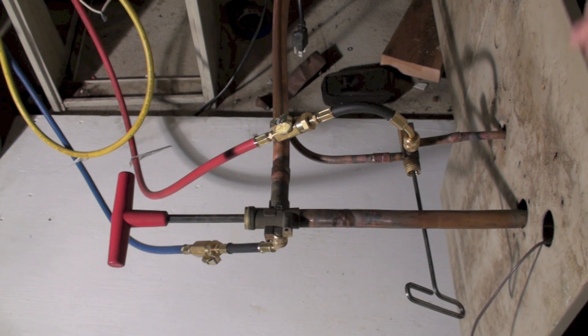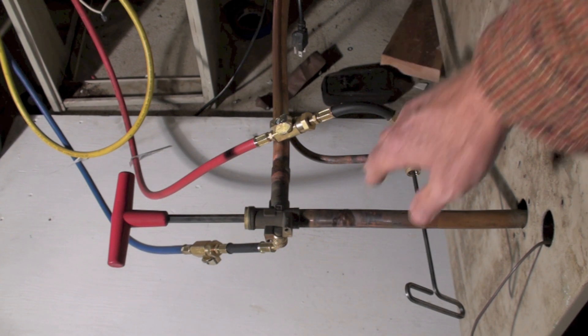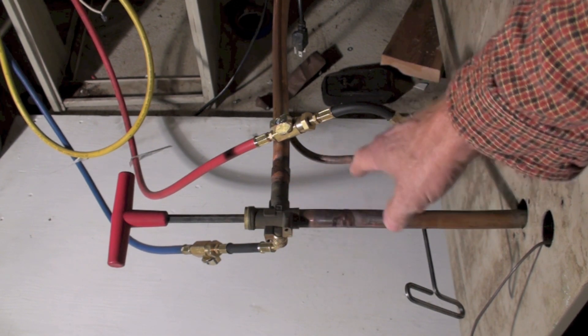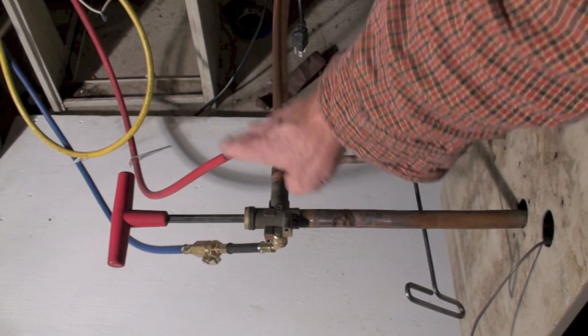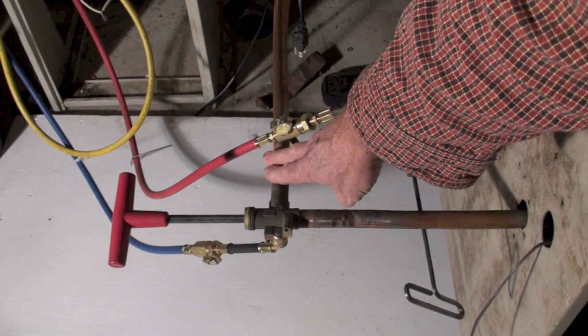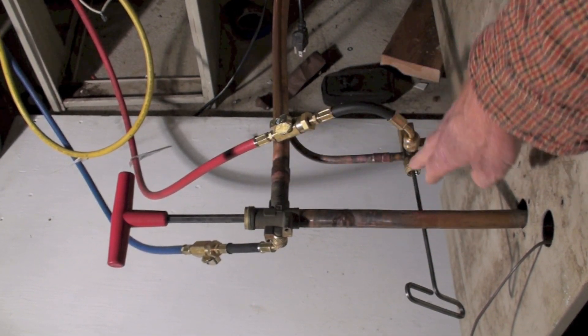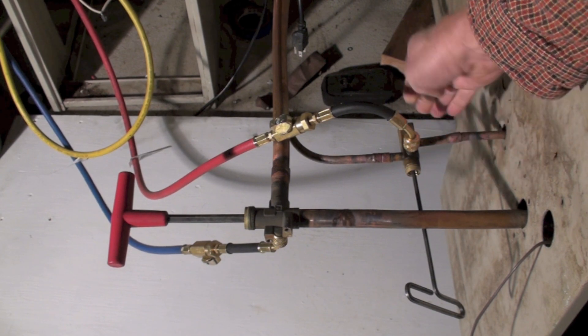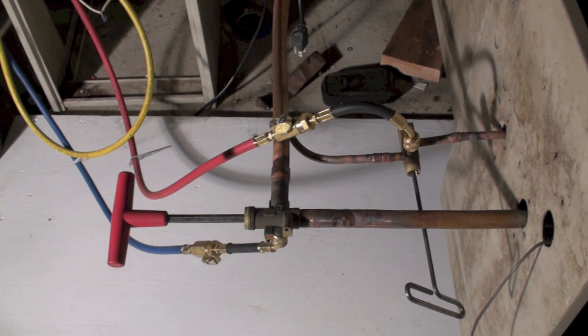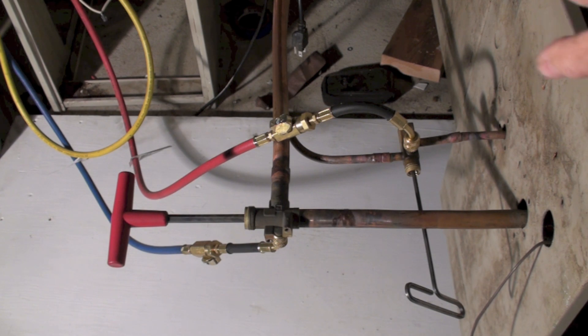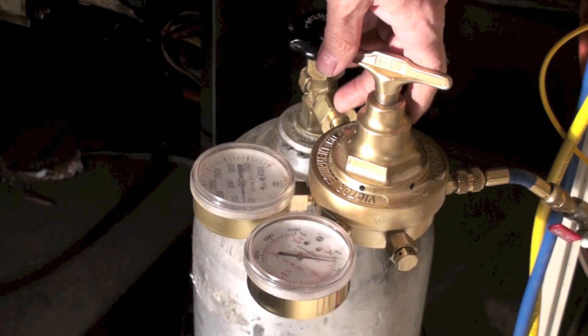When I close this valve, that closed off this from the indoor coil and line set. When I close this one off, it shut off the liquid line from the indoor coil. So now when I pressure up this system, I'm only going to be pressurizing the indoor coil and the line set.